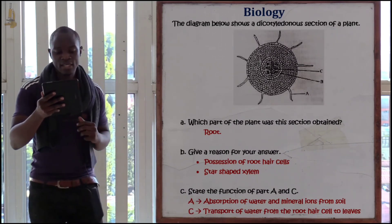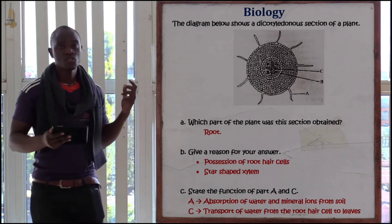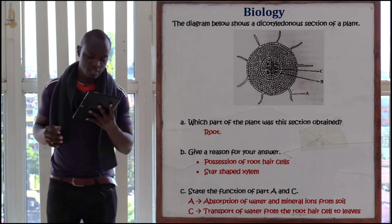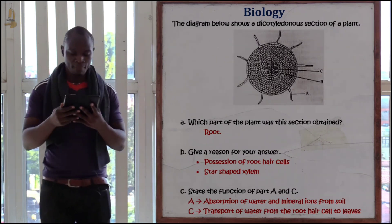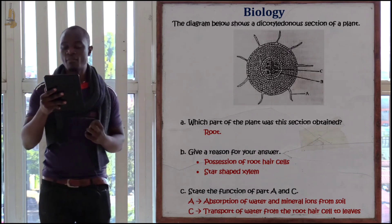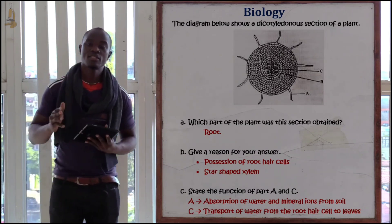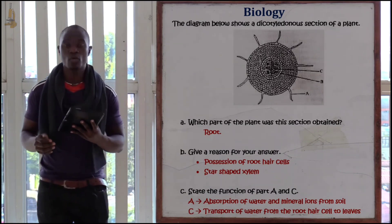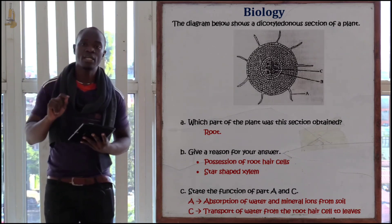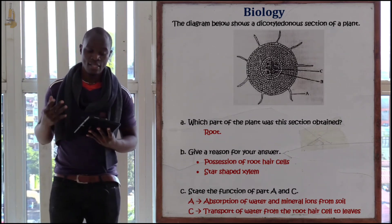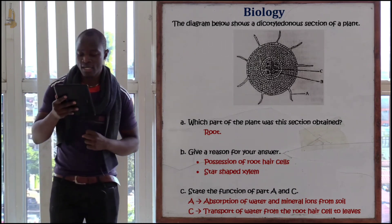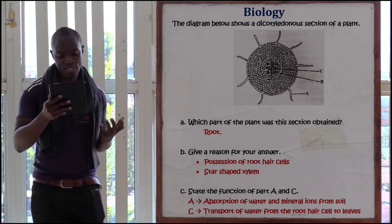The next question is asking: give a reason for your answer in A. The reason is that we have a star-shaped xylem. The star-shaped xylem always indicates this is a dicotyledonous and not a monocotyledonous plant. Also, we can say that the phloem surrounds the star-shaped xylem, which is another reason why this is from a dicotyledonous root.